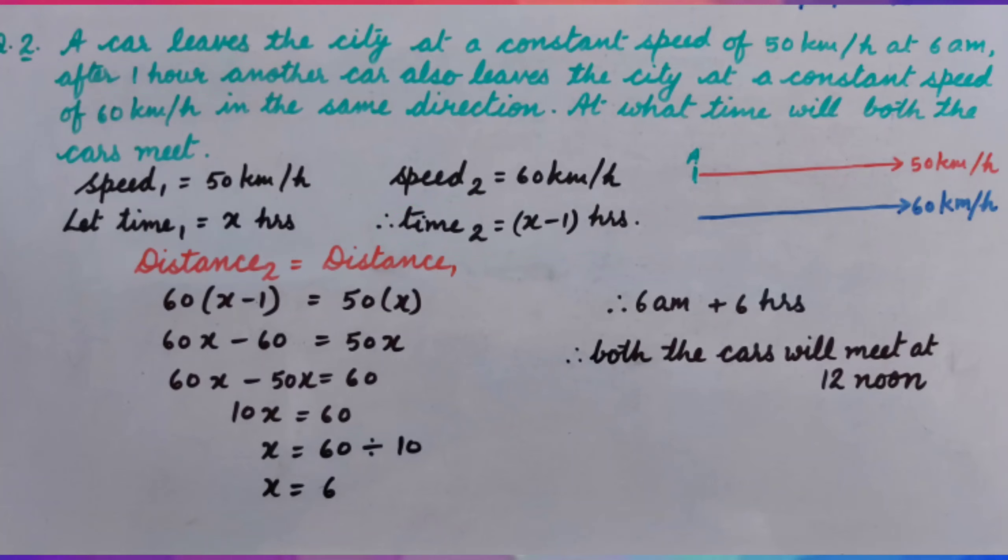As it is given, the distance covered by second car is equal to distance covered by first car. As we know, we can find distance covered by multiplying speed and time. So, 60 multiplied by x minus 1 is distance covered by second car, and 50 multiplied by x is distance covered by first car.